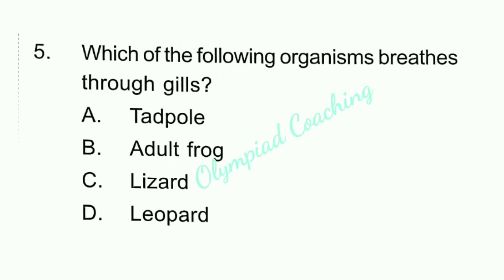Question number 5: Which of the following organisms breathes through gills? Option A is correct — Tadpole. Option B — Adult frog. Option C — Lizard. Option D — Leopard. The others breathe through lungs.